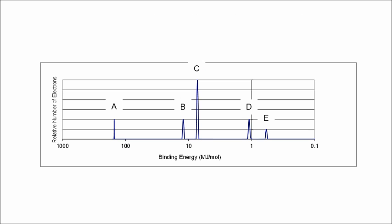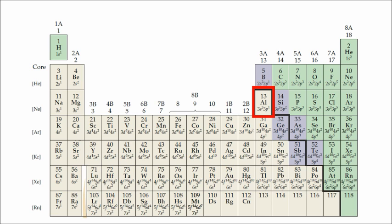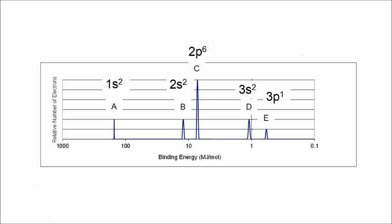The next free response question involves an unknown element with a PES diagram. The first peak (highest binding energy) is 1S2, the next is 2S2, the third is 2P6, the fourth is 3S2, and finally 3P1 — because its peak height is only half as tall, indicating 1 electron. Counting all electrons gives 13, and atomic number 13 is aluminum.